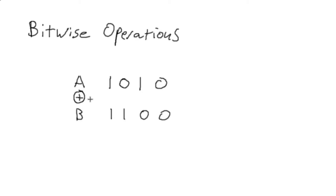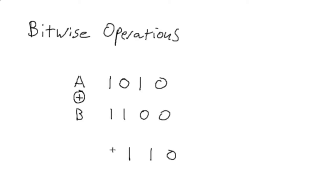Likewise with exclusive OR — since we're dealing with all forms of binary Boolean operations, we may as well include this one as well. Exclusive OR operates the same way, looking at each number on a bit-by-bit basis, comparing the two bits and performing the logical operation. So zero XOR zero is zero, one XOR zero is one, zero XOR one is one, and one XOR one is zero. So performing A XOR B on these two numbers results in this number right here.